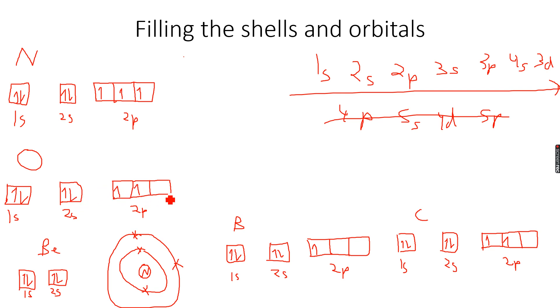There is no empty orbital left for the eighth electron, so now it will start pairing up. It will go back to the first one and pair up with the first electron in the 2p subshell.